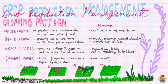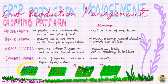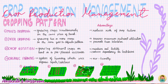In cropping pattern, we have mixed cropping, intercropping, crop rotation, and organic farming. Their definitions and advantages are discussed here. In mixed cropping, seeds are mixed and scattered so there is no specific pattern. In intercropping, there is a pattern — one row of crop A, another row of crop B. In crop rotation, different crops are grown on the land in pre-planned succession. Organic farming is completely natural and eco-friendly.